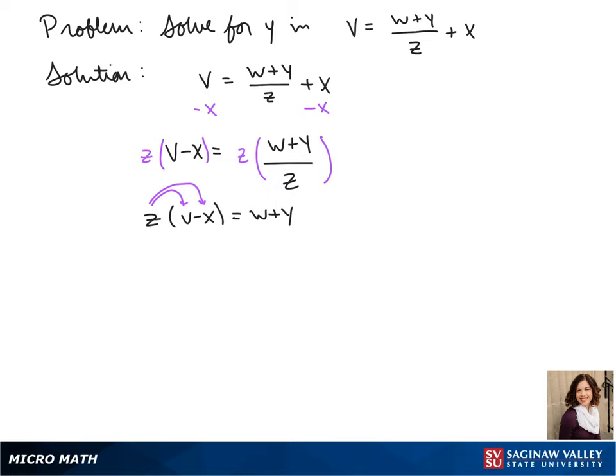We distribute that z to both terms, so we have vz minus xz equals w plus y.